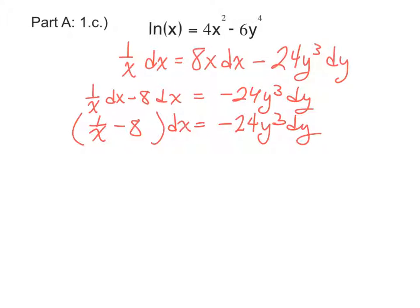I can also simplify the left-hand side a little bit more. Looking down the road, I know that I'm going to have to divide by this 24y cubed. So it'll be helpful to keep this expression as one singular fraction. So I'll get common denominators here. Multiply by x over x. And this will simplify to 1 minus 8x all over x times dx.